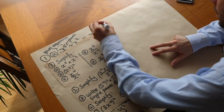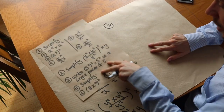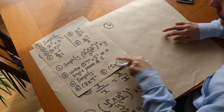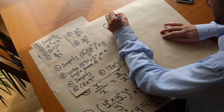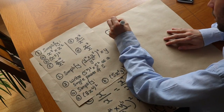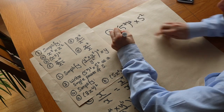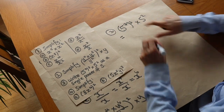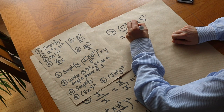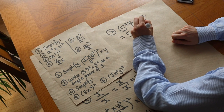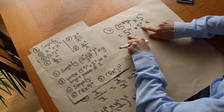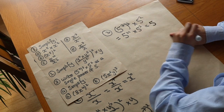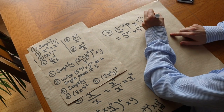For question three, write five to the seven cubed times five squared as a single power of five. We have a power expression to a power, so multiply the powers: five to the twenty-one times five squared. Then multiplying two power expressions we add the powers to get five to the power of twenty-three.